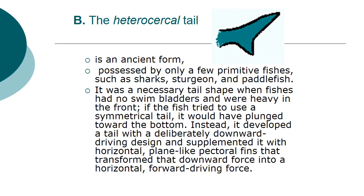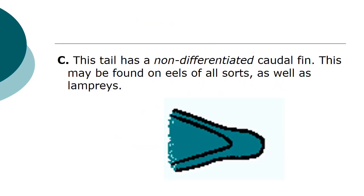The heterocercal tail is a very ancient form possessed by only a few primitive fishes — very rare fishes such as sharks, sturgeon, sandfish, and paddlefish. It was a necessary tail shape when fishes had no swim bladders and were heavy in the front. If the fish tried to use a symmetrical tail it would have plunged toward the bottom, so instead it developed a tail with a deliberately downward-driving design, supplemented by horizontal plane-like pectoral fins that transformed that downward force into a horizontal forward-driving force.